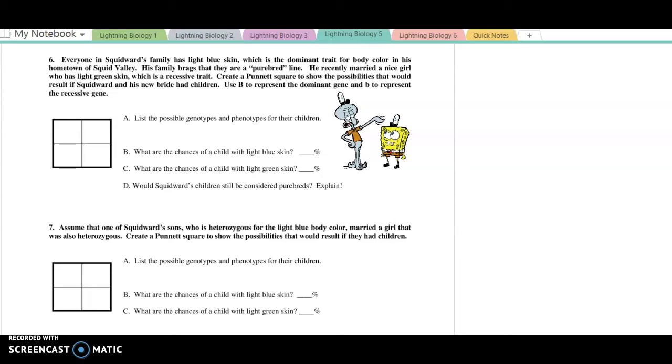Okay, Bikini Bottom Genetics, questions 6 through 8 explained. We'll start with number 6. Everyone in Squidward's family has light blue skin, which is dominant trait. So I'm going to start my key right away. We have light blue, which is dominant, so we'll give it a big B.